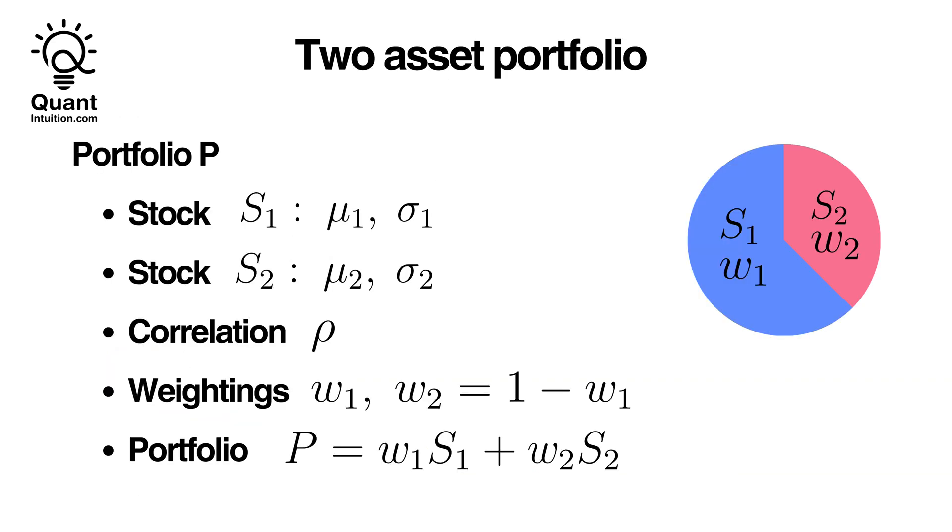To understand the impact of correlation on our investments, let's examine the simplest form of portfolio, one comprising of just two assets, S1 and S2. In interviews and for real-world simplification, we focus on the expected values, mu1, mu2, and the standard deviations, sigma1, sigma2, of these assets.